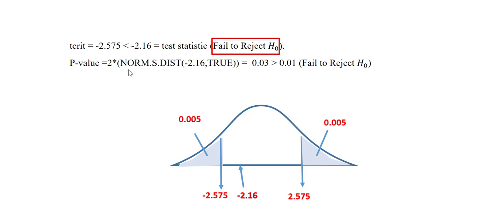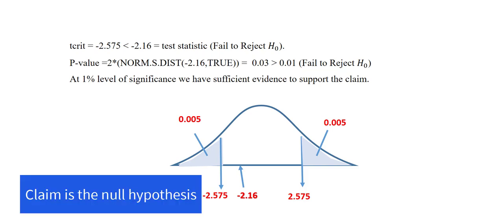We can also find the p-value by typing this formula into any cell in Excel. Since it is a two-tailed test, we are going to be multiplying that value by 2. Note here that we are putting in the test statistic in here. The p-value obtained which is greater than alpha, so the decision is the same. We fail to reject the null hypothesis. We can thus conclude that at 1% level of significance, we have sufficient evidence to support the claim. The claim in this case, again, is the null hypothesis.